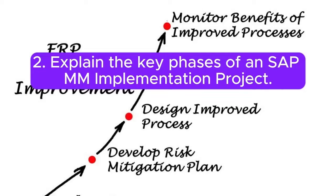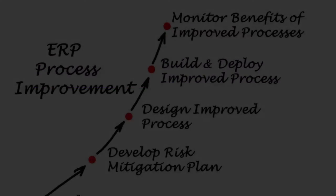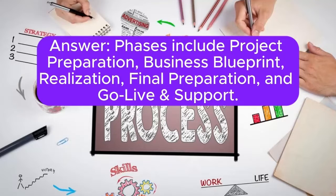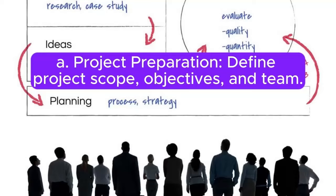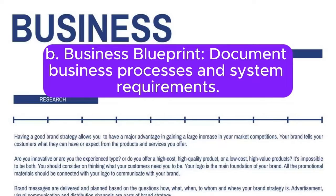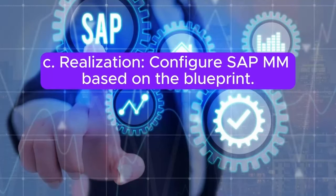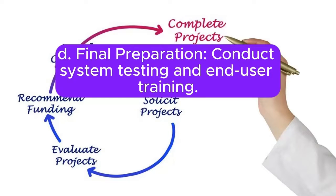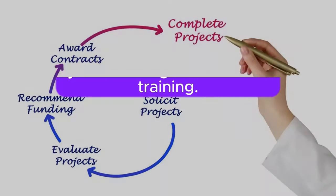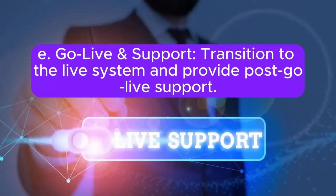Question 2: Explain the key phases of an SAP MM implementation project. Answer: Phases include project preparation, business blueprint, realization, final preparation, and go-live and support. A) Project preparation: define project scope, objectives, and team. B) Business blueprint: document business processes and system requirements. C) Realization: configure SAP MM based on the blueprint. D) Final preparation: conduct system testing and end-user training. E) Go-live and support: transition to the live system and provide post-go-live support.